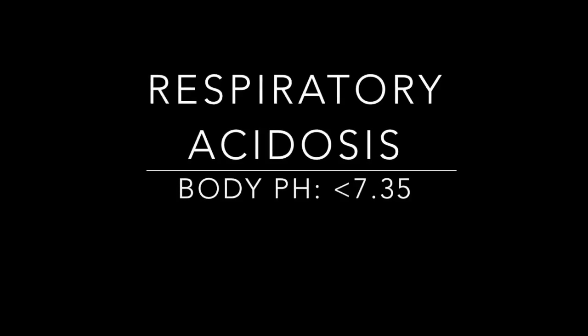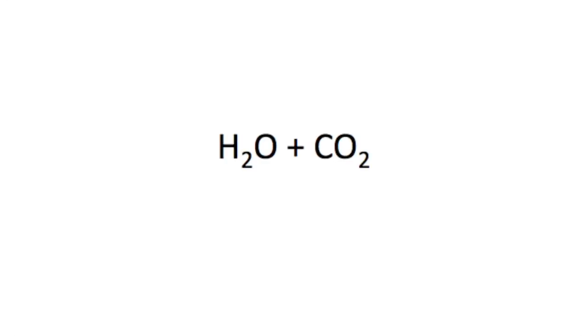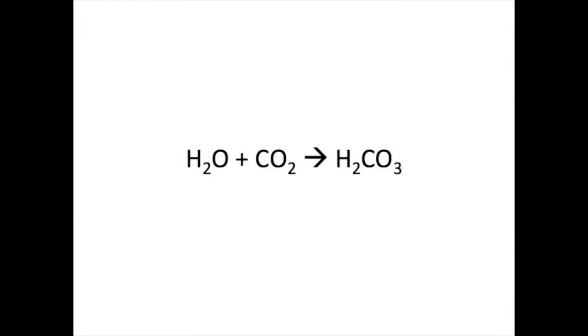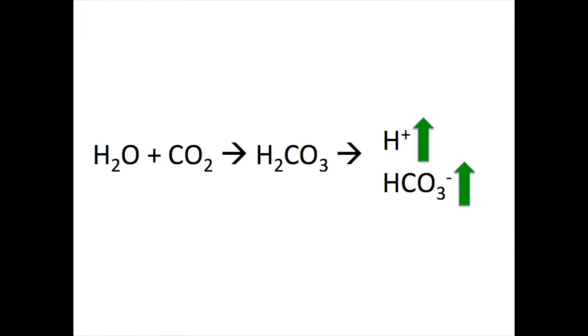Respiratory acidosis, which is a body pH of below 7.35, develops as a result of inadequate ventilation, which occurs in severe cases of pneumonia. Carbon dioxide accumulates in the body, which decreases the amount of bicarbonate in the plasma, causing an increase in the level of carbonic acid and hydrogen ions, which lowers pH.